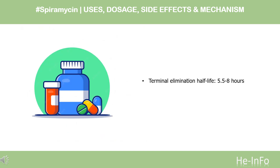Half-life. Intravenous: young persons, 18–32 years of age, approximately 4.5 to 6.2 hours. Elderly persons, 73 to 85 years of age, approximately 9.8 to 13.5 hours. Oral: 5.5 to 8 hours. Rectal in children: 8 hours.